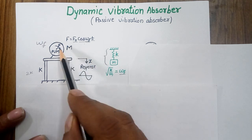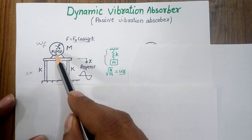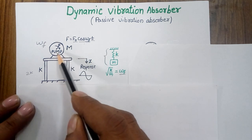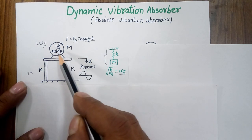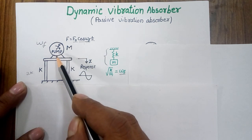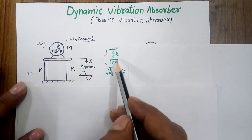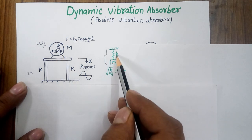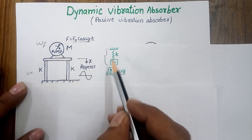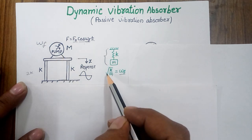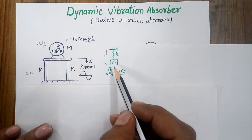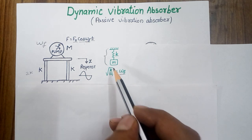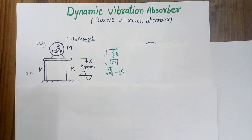The basic requirement for the vibration absorber is that the natural frequency of the vibration absorber should equal the excitation frequency. Here ω is the excitation frequency of the pump. If the pump is exciting at 50 Hz, then this natural frequency of the vibration absorber should also be 50 Hz.